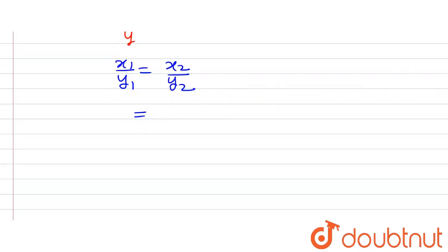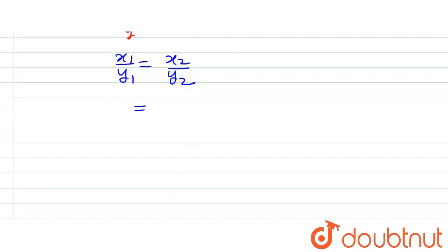So putting in the values that are given, we are given x1 as 840, y1 as 6, and y2 is given as 5, and x2 is supposed to be found out.